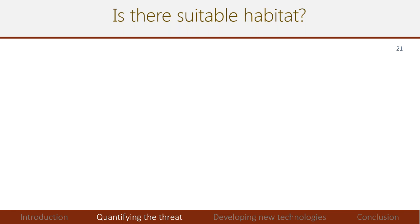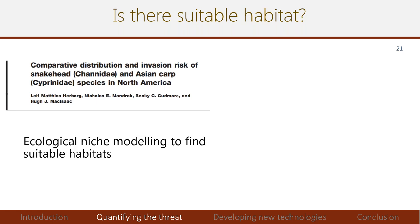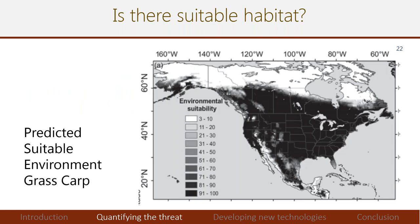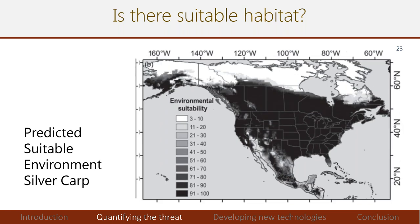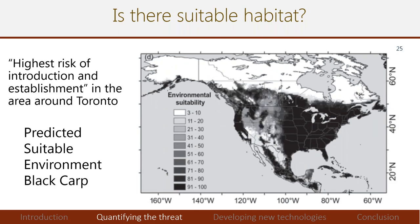Is there suitable habitat for carp in Canada? A study by Herberg et al. used ecological niche modeling and found that a lot of southern Canada is suitable for grass carp, with similar trends for silver and bighead carp, and slightly better news for black carp. The authors noted the highest risk of introduction and establishment is in the area around Toronto. So there is a demonstrable negative impact anticipated, a small number of fish can lead to establishment, and suitable habitat exists throughout Canada.